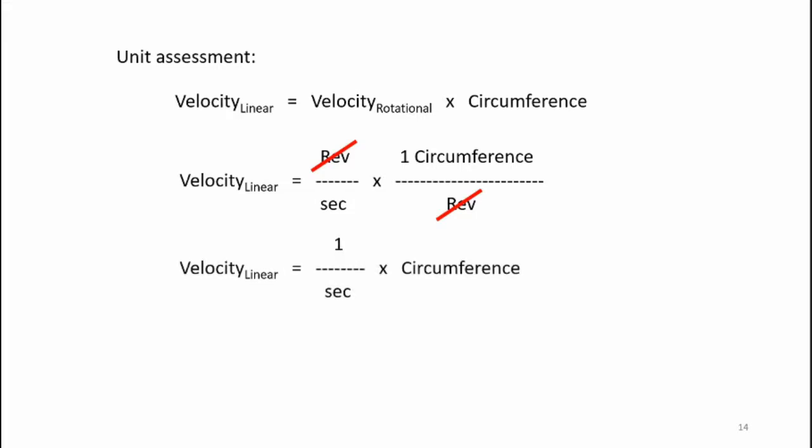Now, let's perform a simple unit analysis to see if the physical relationship makes mathematical sense. Here's the equation: linear velocity equals rotational velocity times circumference. If I put units in, linear velocity equals revolutions per second times one circumference per revolution. The revolutions cancel, and I get linear velocity is one over second times circumference. In units for circumference of meters, linear velocity comes out to be meters per second. That's the proper units that are needed for linear velocity.